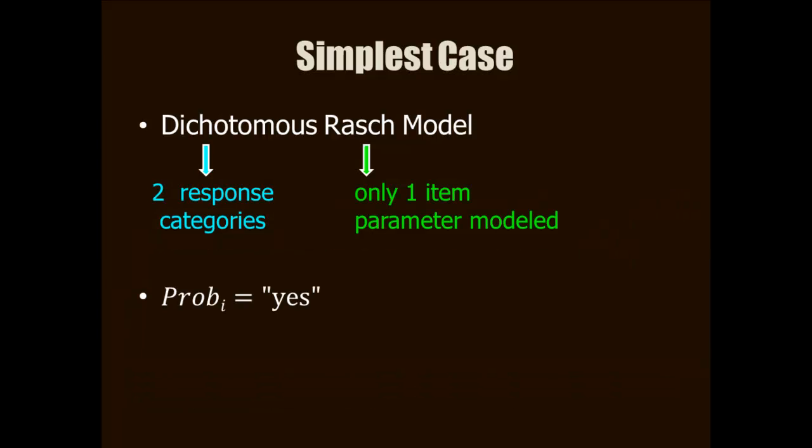We're going to start with the simplest case of an IRT model because it's just the easiest way to show how a mathematical equation can be used to predict item responses. The simplest case is the dichotomous Rauch model. It's dichotomous in that it is used for items for which there are only two possible responses, for example, an item that you can answer either yes to or no to. Rauch models only model one characteristic of items, and that's their item difficulty.